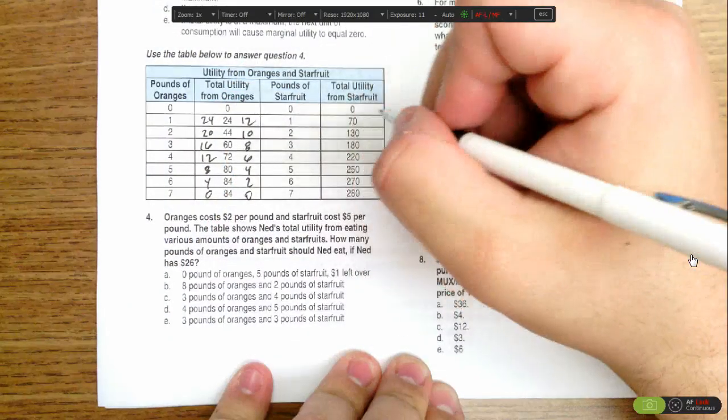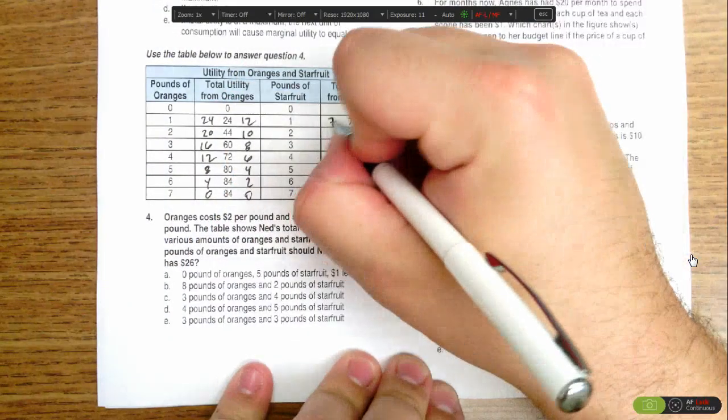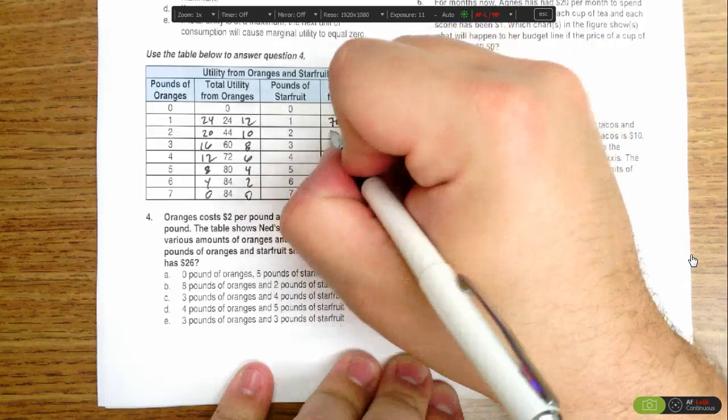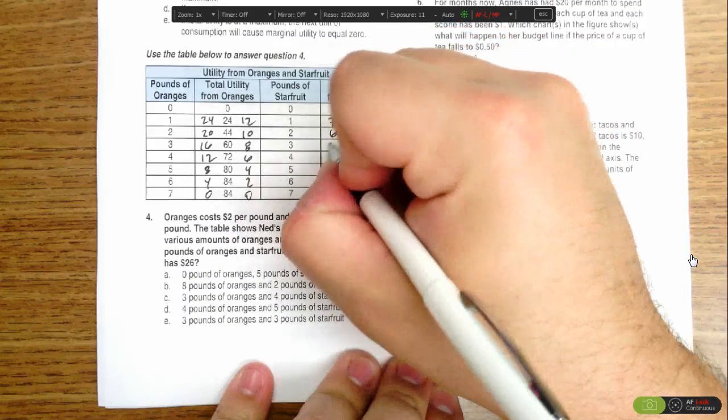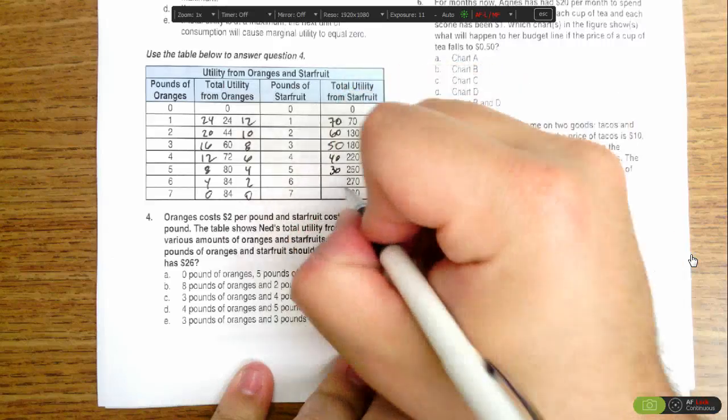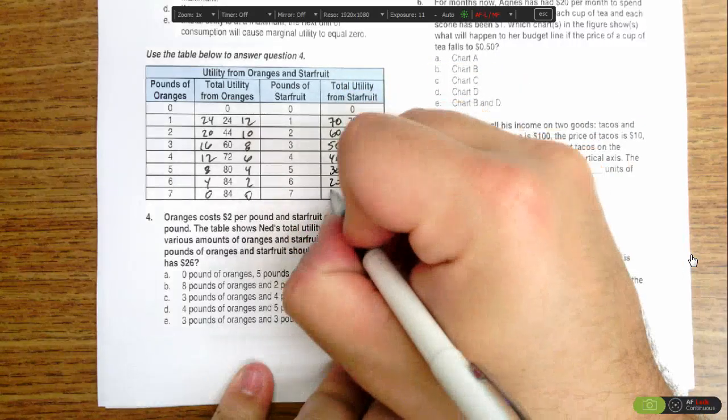For star fruit we see that total utility goes from 0 to 70 for the first one, it increases by 60 for the second, by 50 for the third, by 40 for the fourth, 30 for the fifth, 20 for the sixth, 10 for the seventh.